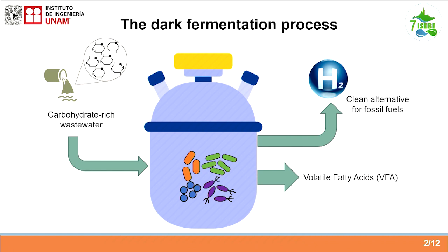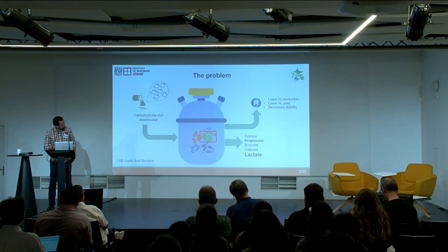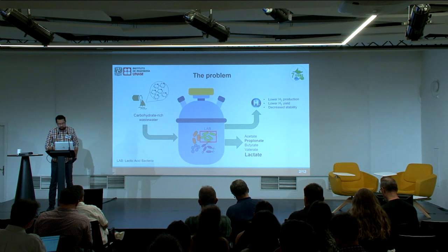This is typically the process we expect in dark fermentation. However, some of these carbohydrates — the majority of them — are easily degradable. This is a problem because many kinds of bacteria can use these carbohydrates and produce something totally different than what we are expecting. One of these microbial groups that is especially important in dark fermentation is lactic acid bacteria. This bacteria uses the carbohydrates to produce lactate. The problem is that lactate accumulates in the process — it can decrease hydrogen production, decrease the hydrogen yield, and compromise the stability of the process.